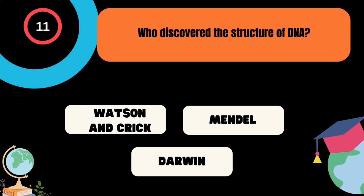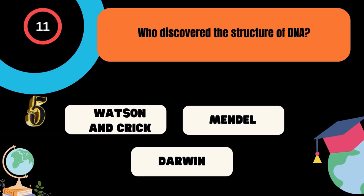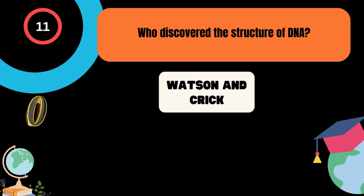Who discovered the structure of DNA? A. Watson and Crick, B. Mendel, C. Darwin. And the correct answer is Watson and Crick.